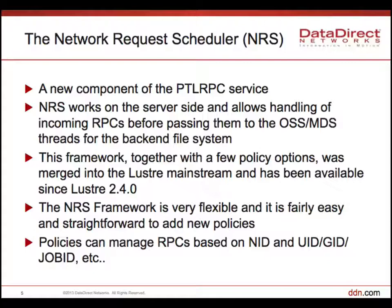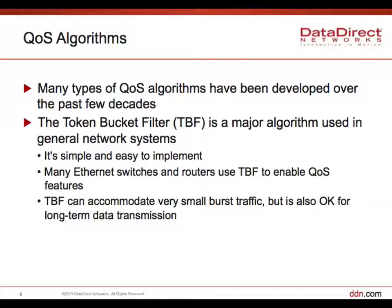The policy can manage RPCs based on an ID — a network ID, UID, or job ID — it depends on the policy. Regarding QoS algorithms: there are many types available, with many research papers developed over the past few decades. The token bucket filter is one of the major algorithms to enable QoS filtering in network systems because it is very simple and easy to implement. Many Ethernet switches and routers use the TBF algorithm to enable QoS filtering.